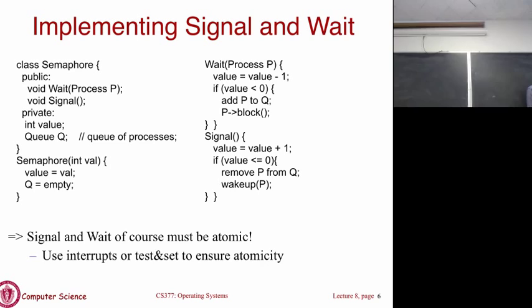When calling wait, we decrement the value. If value drops below zero, there are no slots available, so we add the current process to the waiting queue and block it. When calling signal, we do the opposite — increment value by one, and if value is less than or equal to zero, we remove a process from the queue and wake it up.